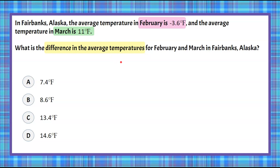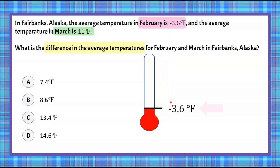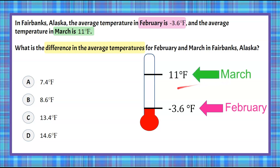Let's put all this information on a thermometer so that we can visualize it. The first temperature given for February was negative 3.6 degrees Fahrenheit. Then in March it was a little warmer on average at 11 degrees Fahrenheit.